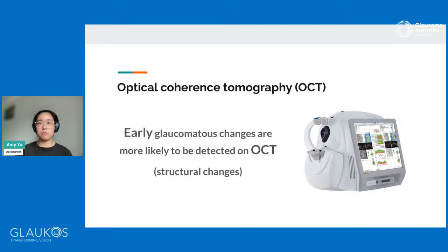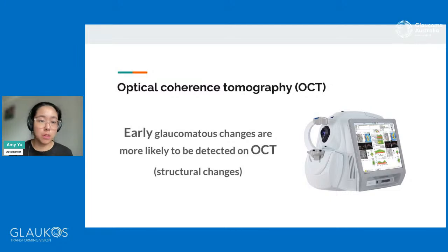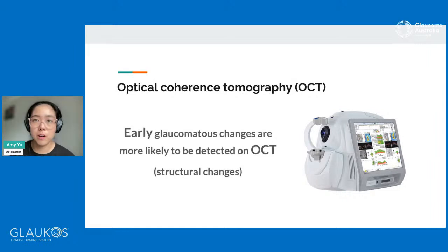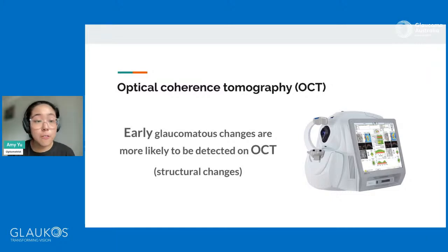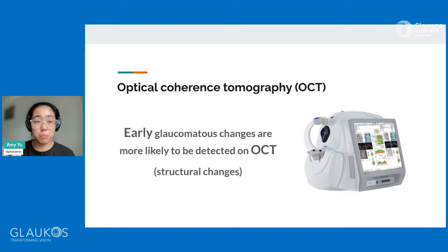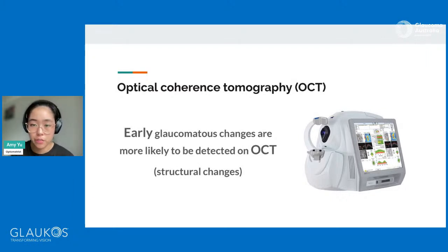Another thing you may be familiar with is the scans of the back of the eyes. This is what we call an optical coherence tomographer, an OCT — that's just in that picture on the right there. There are a couple of versions of this machine but they all pretty much work the same way. It's a very effective way of monitoring structural changes to the back of the eyes over multiple visits, since most early glaucomatous changes are more likely to be detected on our OCT.